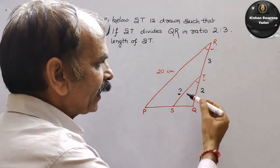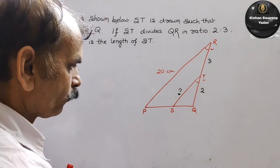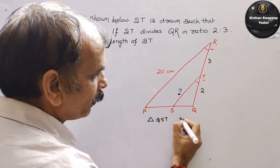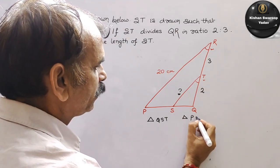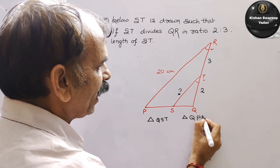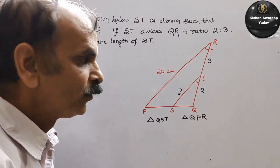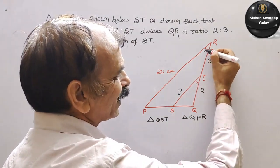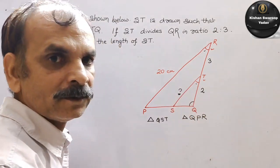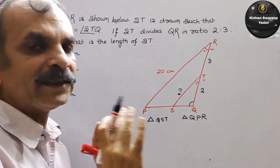Toh aap dekho, yeh dono triangles hamare kaise hain? Similar. Chota triangle aur bada triangle aapke similar hain. Toh chota wala triangle hamara hai QST, aur bada wala triangle hamara hai PQR. Yeh dono triangle aapke similar hain — kaise? Yeh dekho: this angle is equal to this angle — given hai. Aur yeh wala angle aapka common hai. Toh by AA criteria se yeh dono aapke similar hain.